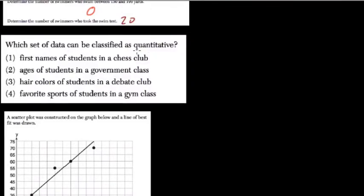Next we want to know which data can be classified as quantitative. Quantitative refers to a number value. So the first names of students is not a number value, it's a name. The ages is a number — that's going to be a good one. You can determine who's older.